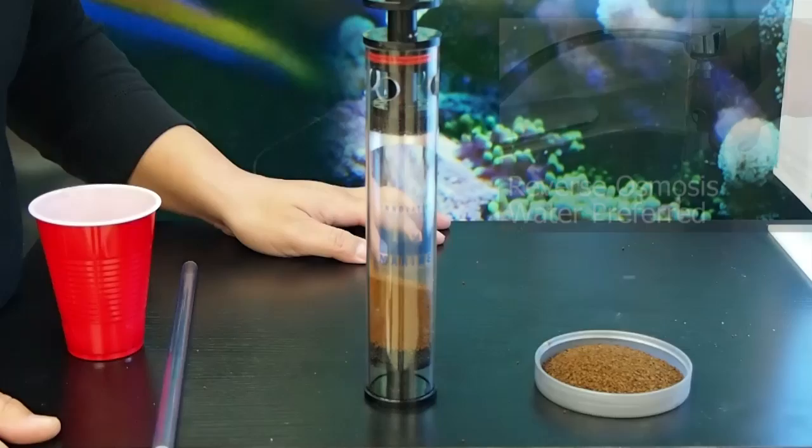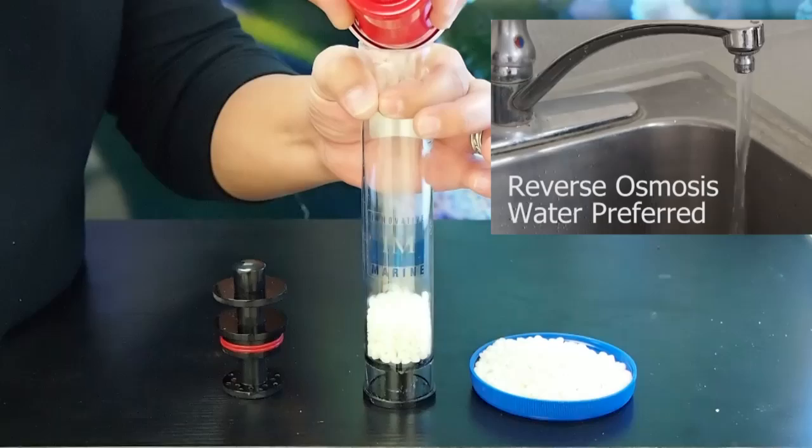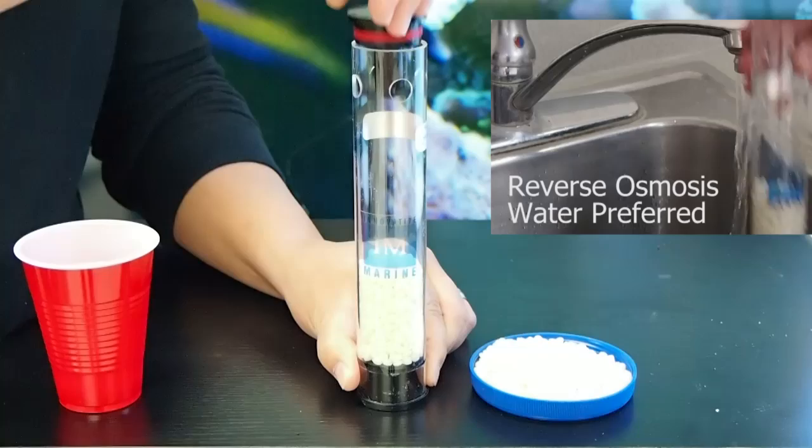When running bio pellets in your new Minimax reactor, you won't need the supplied sponges. Pour in the manufacturer recommended amount, cap, and install into your reactor.